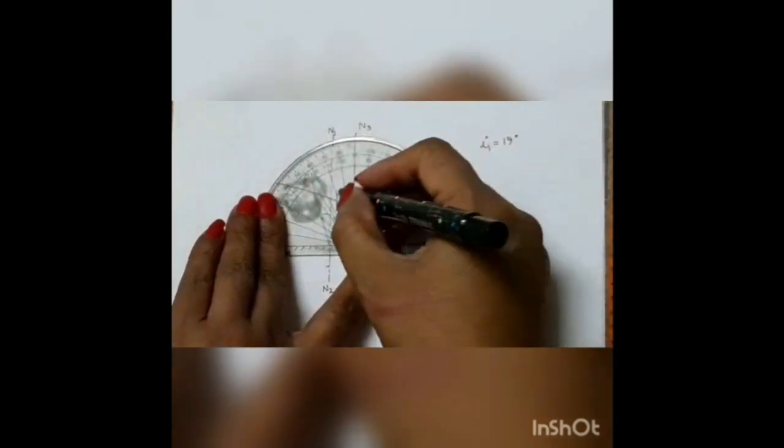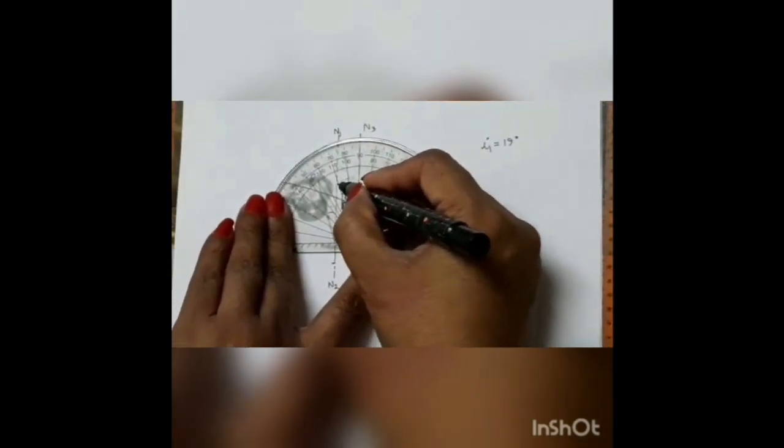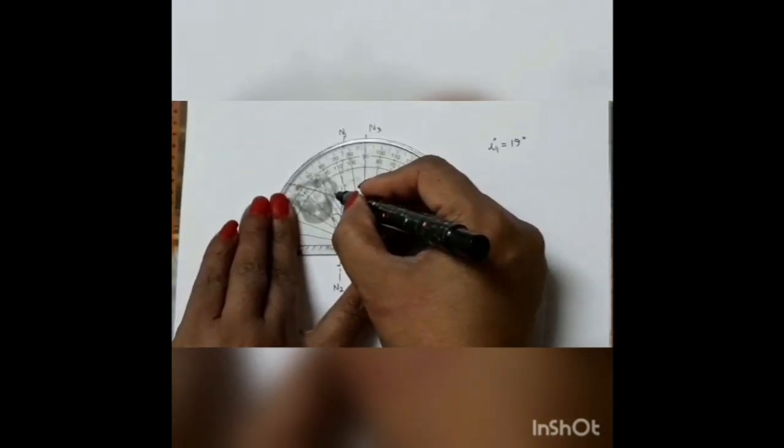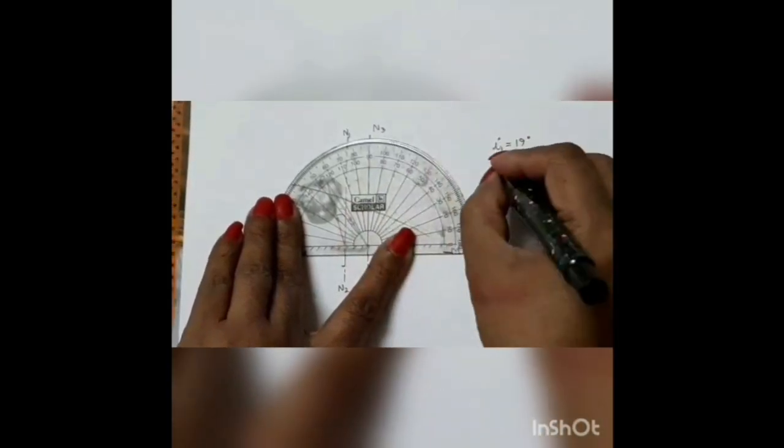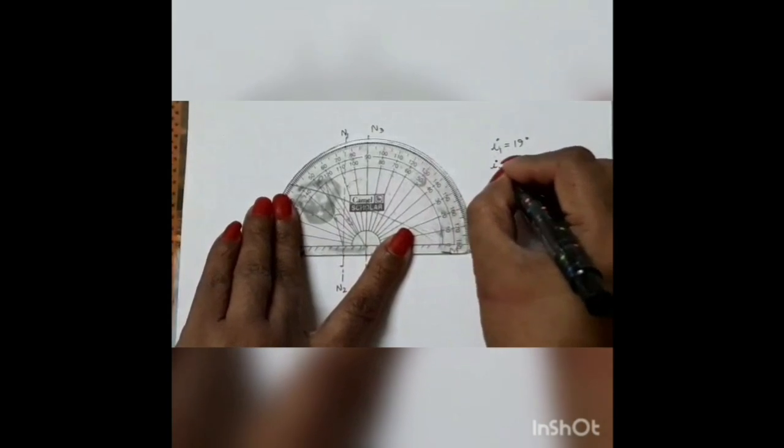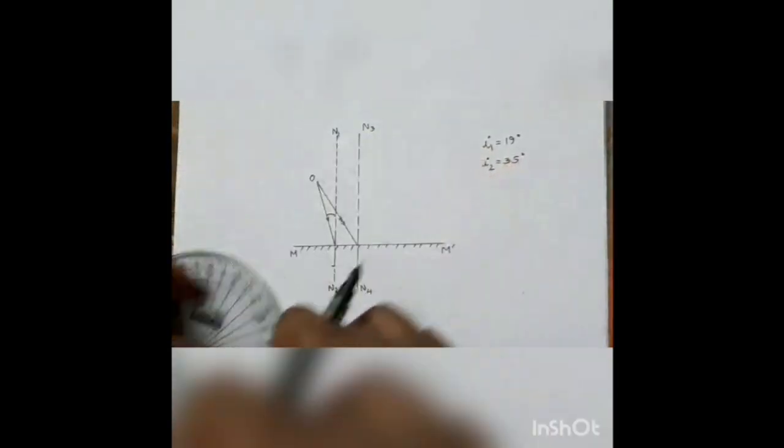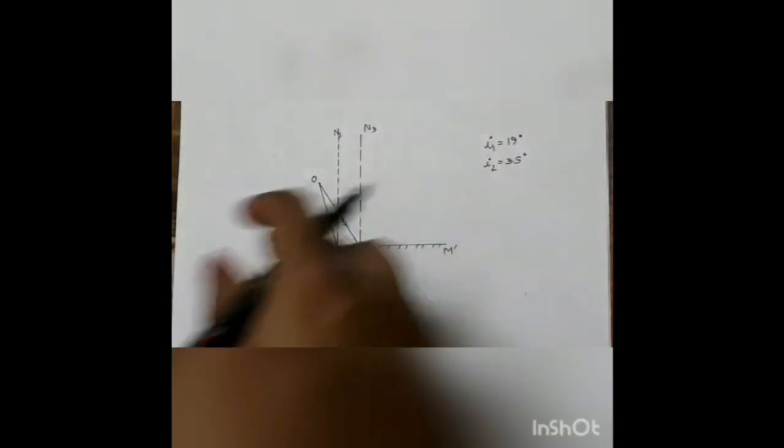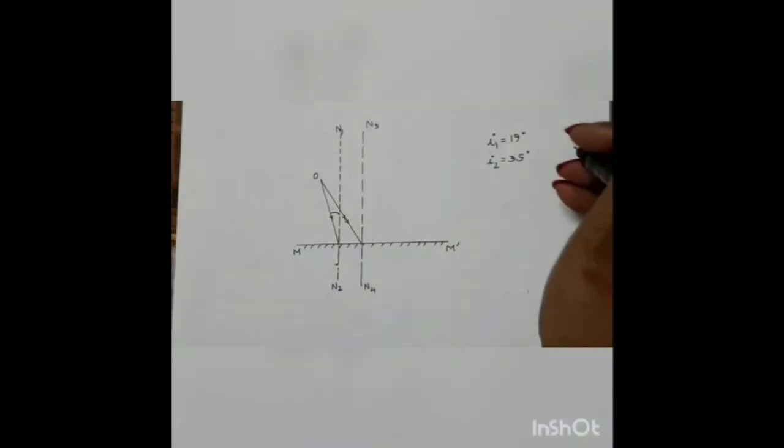The other one, you can see 10, 20, 30, and then 35. 35 degrees. So by the laws of reflection we know that angle I is equal to angle R.